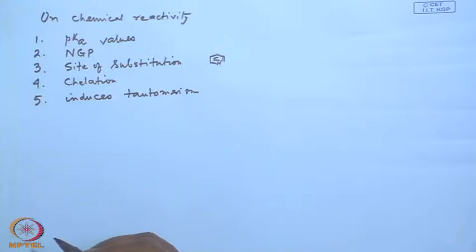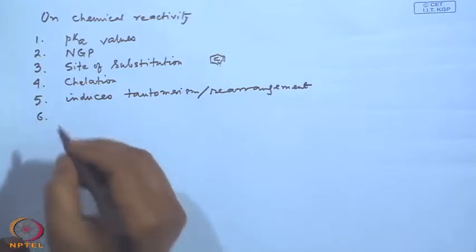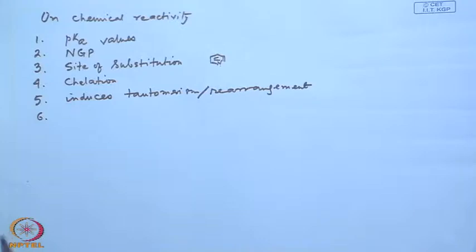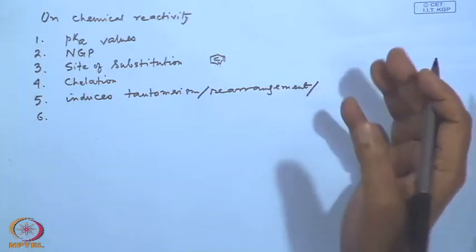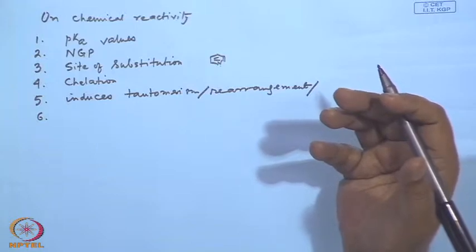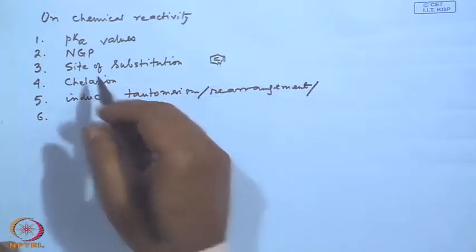Whenever you have a heteroatom there is a likelihood of tautomerism. In pure carbon–hydrogen compounds you do not see tautomerism; somewhere the presence of a heteroatom is a must. The heteroatom also sometimes induces rearrangements. The site of substitution is important — the site could be in the ring or it could be on the nitrogen, meaning substitution or addition taking place at the nitrogen end.